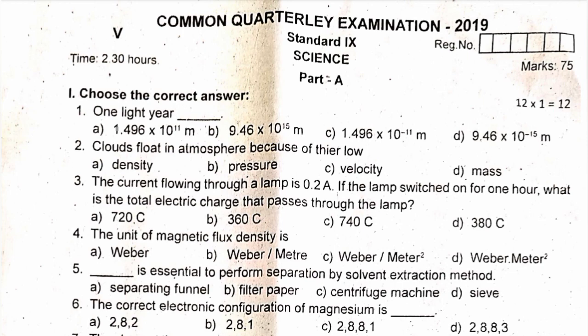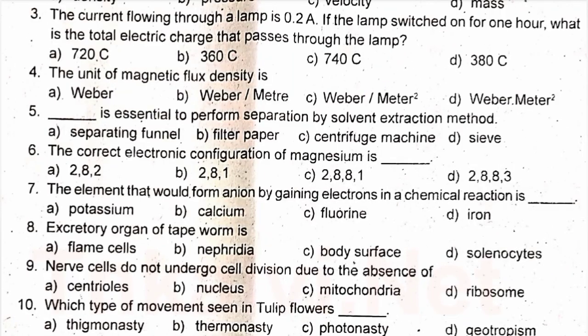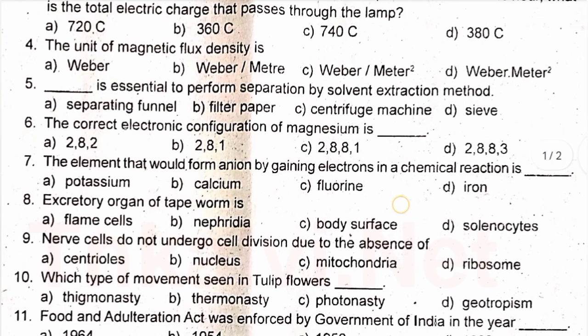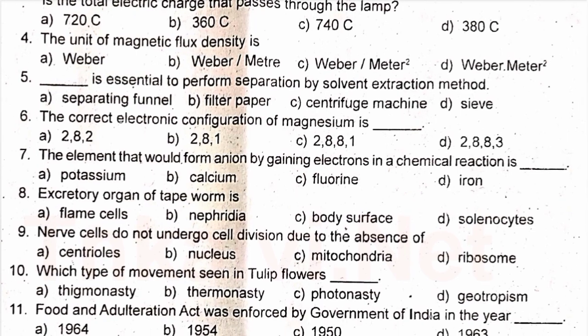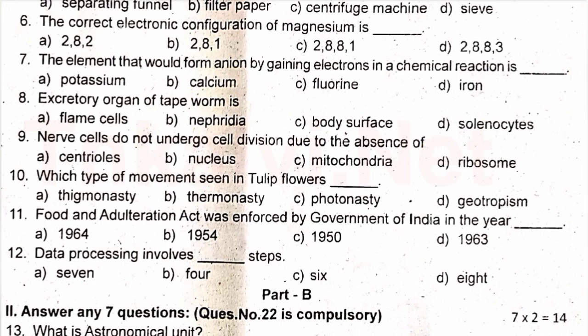Question 4: The unit of magnetic flux density is [blank]. Question 5: [Blank] is essential to perform separation by solvent extraction method. Question 6: The correct electronic configuration of magnesium is [blank]. Question 7: The element that would form an anion by gaining electrons in a chemical reaction is [blank]. Question 8: The excretory organ of tapeworm is [blank]. Question 9: Nerve cells do not undergo cell division due to the absence of [blank]. Question 10: Which type of movement is seen in tulip flowers? Question 11: The Food Adulteration Act was enforced by the Government of India in the year [blank]. Question 12: Data processing involves [blank] steps.